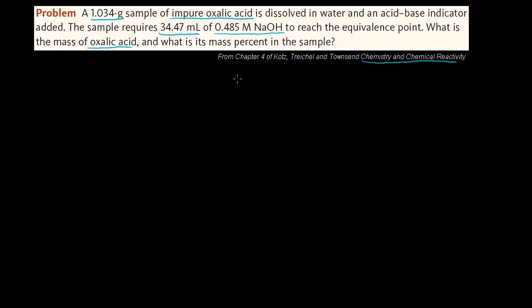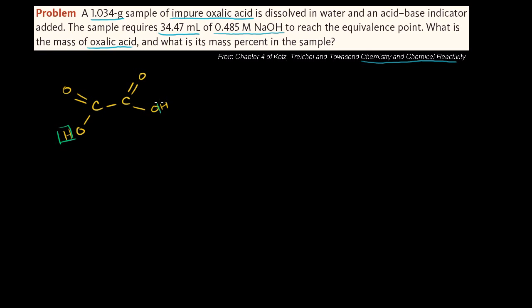Before we even break into the math of this, let's think about what's happening. We have some oxalic acid — it's really two carboxylic acid groups joined together. Watch the organic chemistry playlist if you want to learn more about that. It has a double bond to one oxygen and another bond to a hydroxide on each carbon. The important thing to realize is that there are two protons to nab off of it.